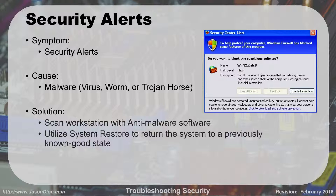Security alerts are a symptom whose cause could be a virus, worm, or trojan. Scan with anti-malware solutions. If you have a virus, go through virus remediation steps: turn off system restore, clear the virus, re-enable system restore, and if needed revert to a previously known good state. For example, a virus like win32.zali.v is a high-risk worm/trojan that records keystrokes and takes screenshots to steal personal information. You'd block it and remove it using the security center.